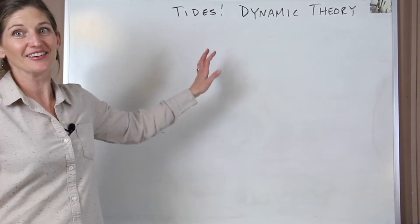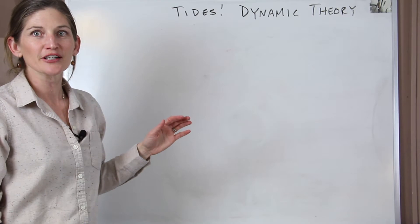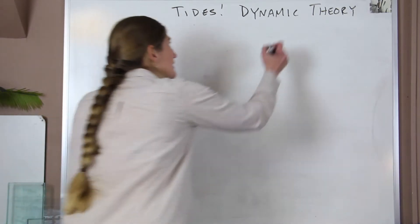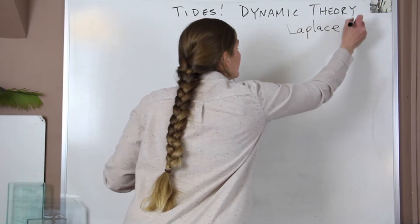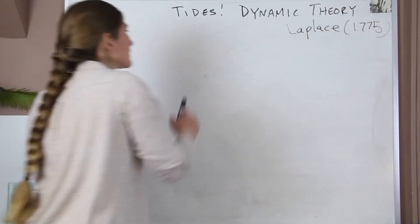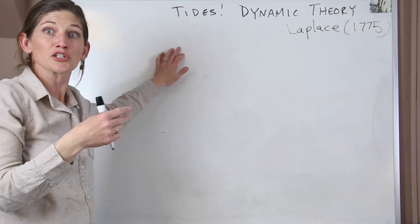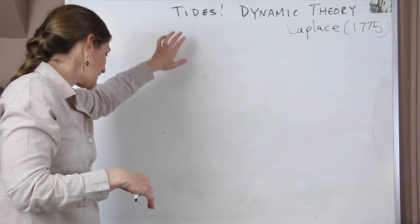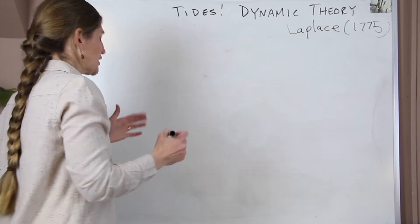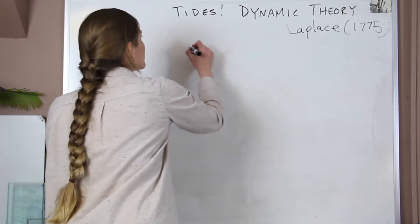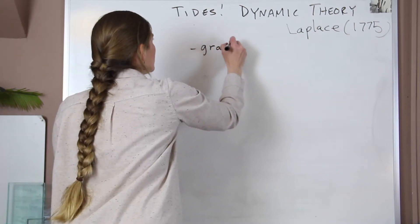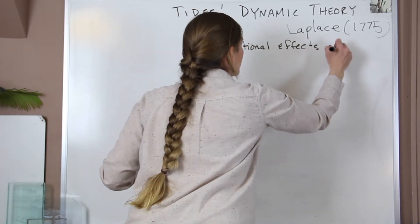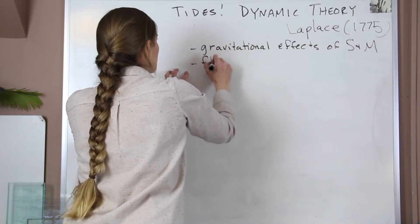In this lecture we're going to talk more about tidal theory with a look at the dynamic theory of tides. This theory was proposed by Pierre-Simon Laplace in 1775. It takes the equilibrium theory — which covers the gravitational effects of the moon and sun on the earth's tides — and also incorporates fluid motion.